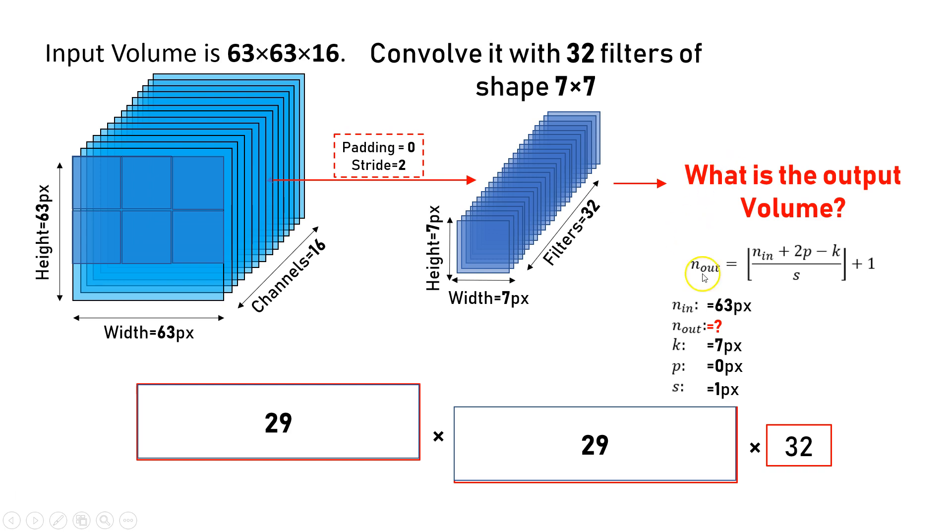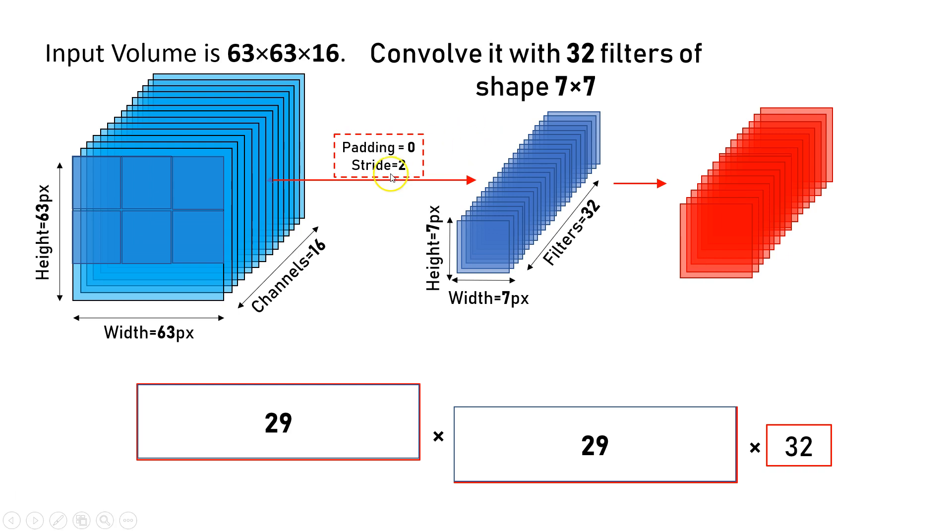So yes, 29 by 29 by 32. This is the answer to the question. If we have input 63 by 63 by 16 and we need to make a convolution with 32 filters of shape 7 by 7, we have padding equal to 0 and stride equal to 2, the result of this layer is 29 by 29 by 32.